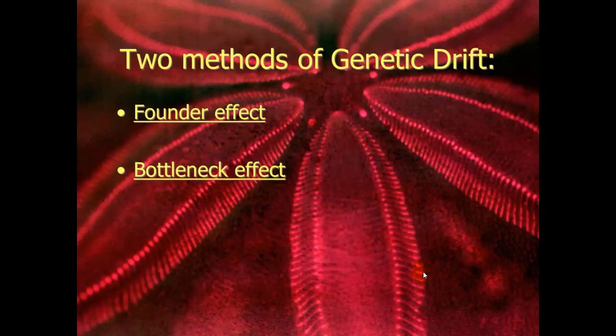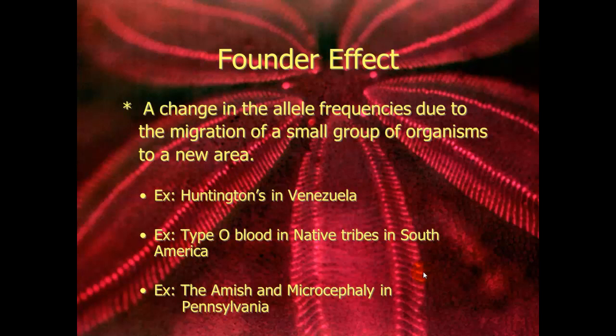Some ways genetic drift can happen include the founder effect and the bottleneck effect. The founder effect happened with Huntington's disease in Venezuela, type O blood in South America, and microcephaly among the Amish in Pennsylvania. The founder effect means a change in allelic frequencies due to migration of a small group of organisms to a new area. A small group moved to Venezuela, a couple of people had Huntington's, and so that allele became more prevalent in that population.